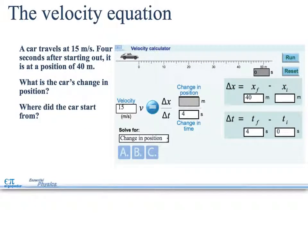A car travels at 15 meters per second. 4 seconds after starting out it is at a position of 40 meters. What is the car's change in position? Where did the car start? So here you're going to end at 40. We're looking for where it started. It ended at 4 seconds and started at 0. So, if you solve for this, you're going to get a change in position of 60 because the car started at minus 20.